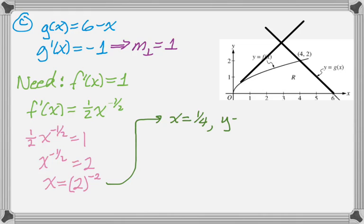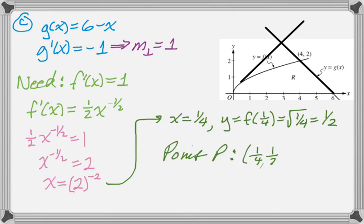We need the y value because we're looking for the actual coordinates. So y is going to be f of 1 fourth, which is the square root of 1 fourth, which is 1 half. And that's, I mean, if you look at the picture, I almost got that. But anyway, the coordinates point P are 1 fourth comma 1 half, and that's the entire problem.